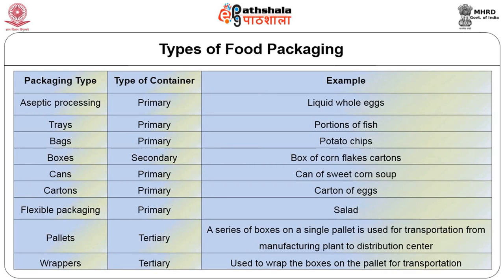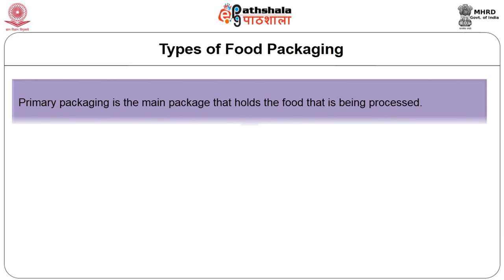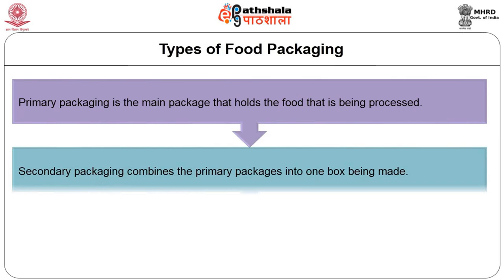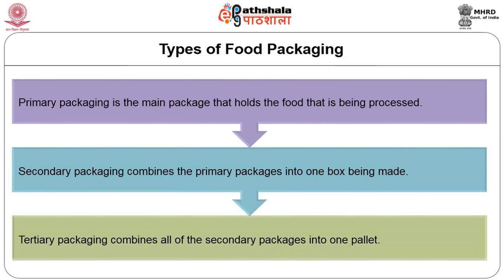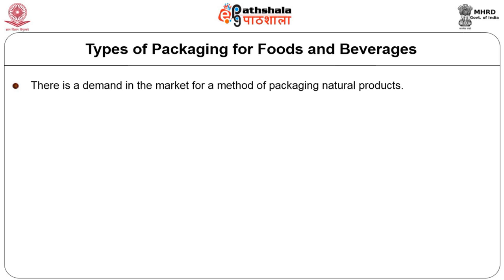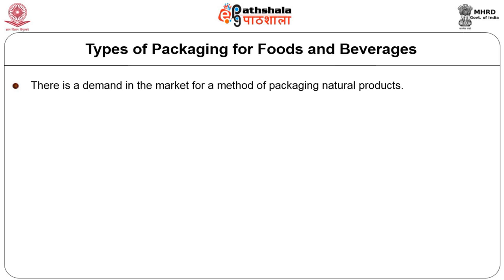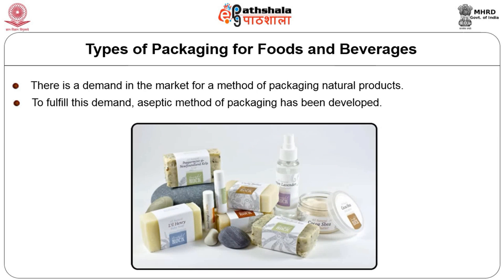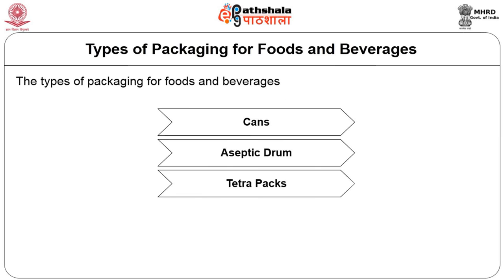The table displayed gives an overview of the types of packaging, types of container and examples of food packed. Primary packaging is the main package that holds the food being processed. Secondary packaging combines the primary packages into one box. Tertiary packaging combines all of the secondary packages into one pallet. There is a demand in the market for methods of packaging natural products, and to fulfill this demand, aseptic methods of packaging have been developed.